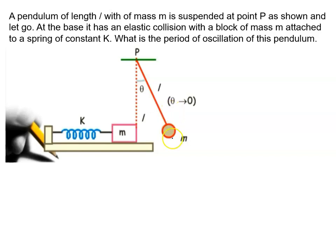A pendulum of length L with mass M is suspended at point B as shown in the figure. At the base it has an elastic collision with a block of mass M attached to a spring of spring constant K. What is the period of oscillation of this pendulum?